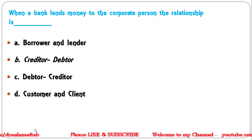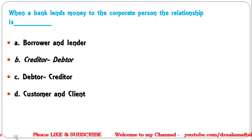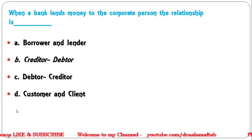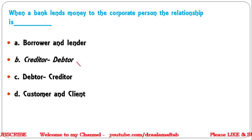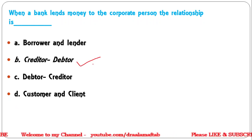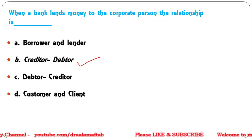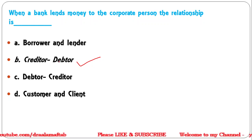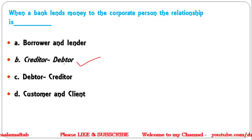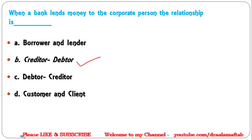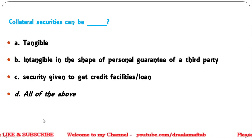Next question: When a bank lends money to a corporate person, the relationship is what? Options: Borrower and lender, Creditor and debtor, Creditor and customer, or Customer and client. The correct answer is Creditor and debtor — a bank is the creditor whereas the borrowing person is called the debtor. Option B is correct.